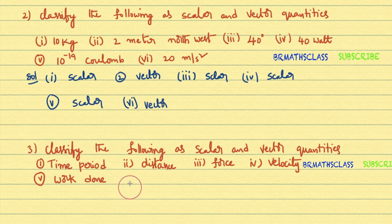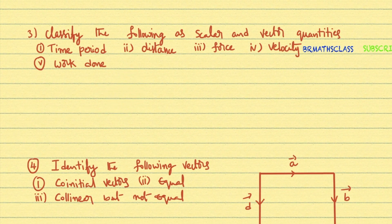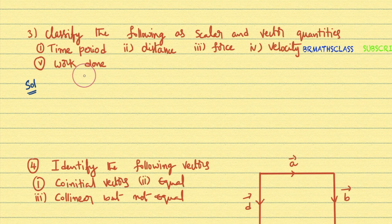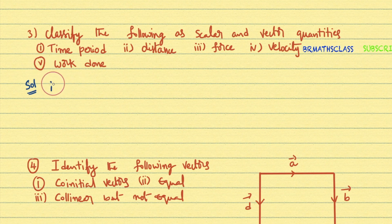Now we will move to the third question: Classify the following as scalar and vector quantities. Few physical quantities are given, and by seeing them you need to say whether they are scalar or vector. First bit: Time. Time is a physical quantity having only magnitude but no direction — what is the time? Four o'clock. In which direction? You don't ask that. So time is a scalar quantity.